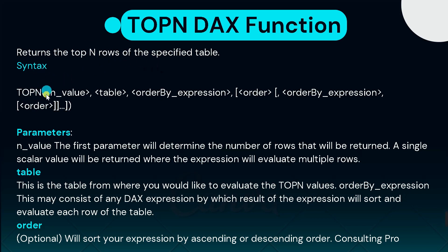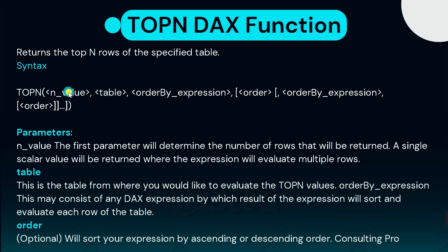Here you can see the syntax of TOPN. Inside the bracket you pass the N value — the number of records you want to see. That is the first parameter. The second parameter is the table name — from which table you want to extract those rows. The third is the order by expression — in which order you want to see the data. These are the three parameters of the TOPN DAX function.